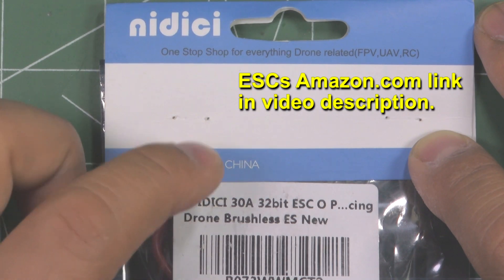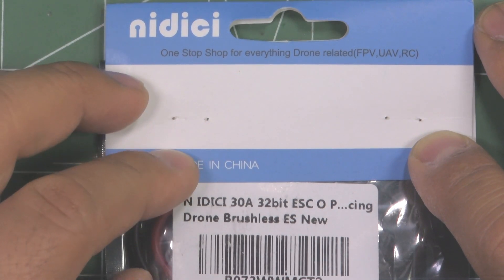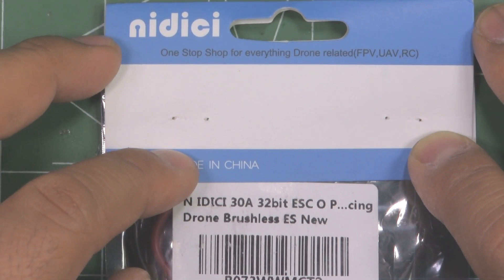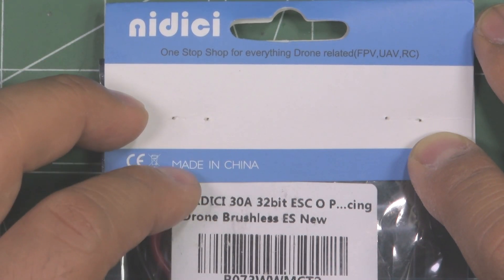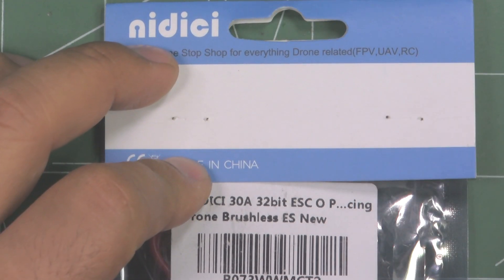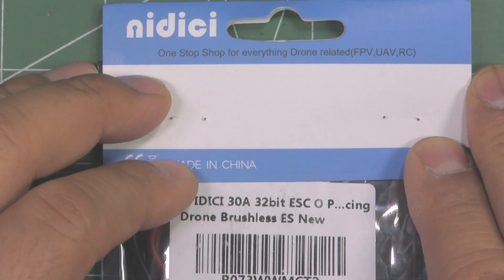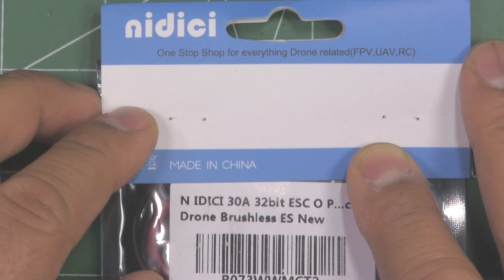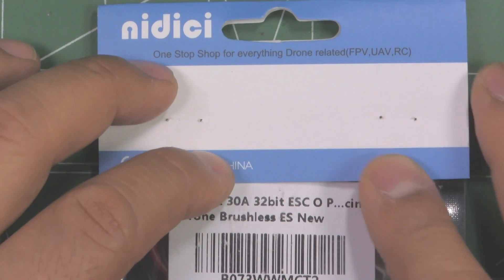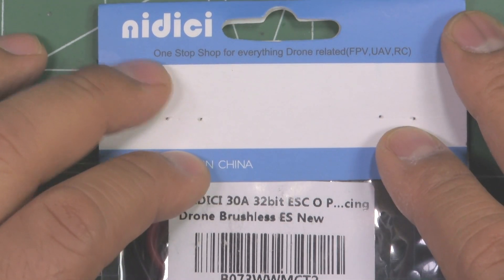So these arrived pretty fast actually. From the moment I received shipment notification, they came within a couple of days. I guess they ship from a local warehouse within the US, so for people that live in the US, you'll get them pretty quick I think, within a couple of days since they used USPS priority, so it was about three days.